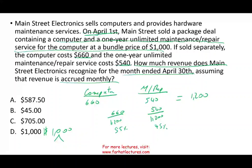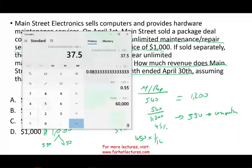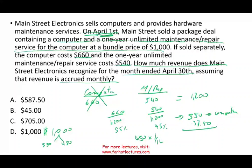By the end of the month, we did deliver the computer because we sold it on April 1st. So by end of the month, we can recognize $550 for the computer — 100%, since we completed that performance obligation. We also delivered one month's worth of services. $450 goes to the maintenance and repair contract, so we take 1/12 times $450 and we can recognize an additional $37.50. Therefore, our total revenue is $587.50 by the end of the month, and the answer is A.